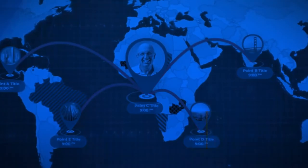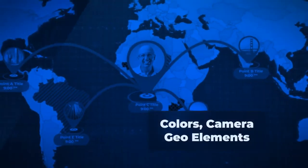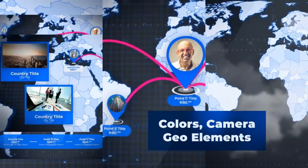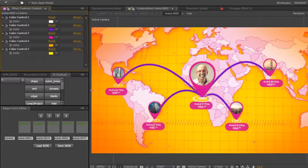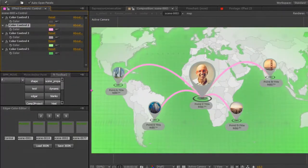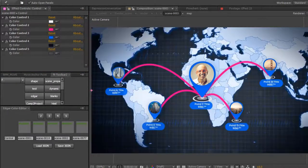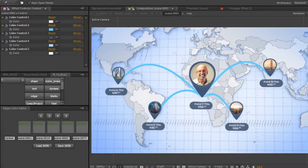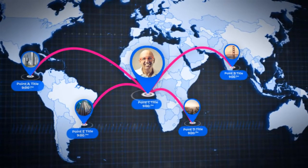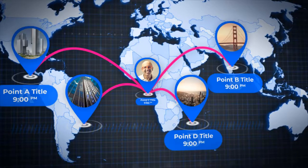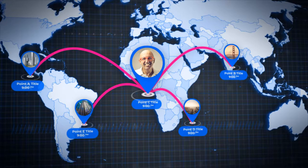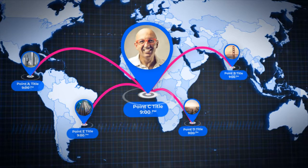Working with the template is easy because the project contains three types of settings. The first type of settings allows you to customize the colors of the map individually for your design. The second type of settings adjusts the position of geo marks and routes on the map.